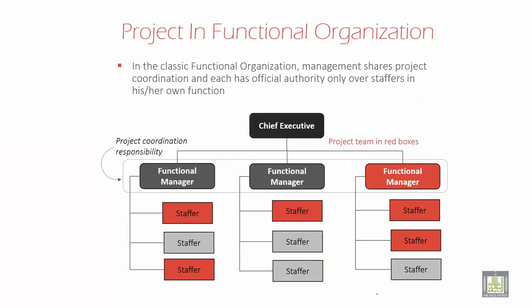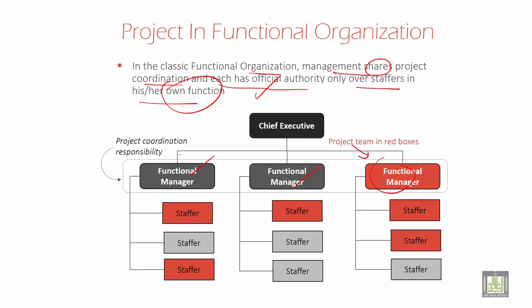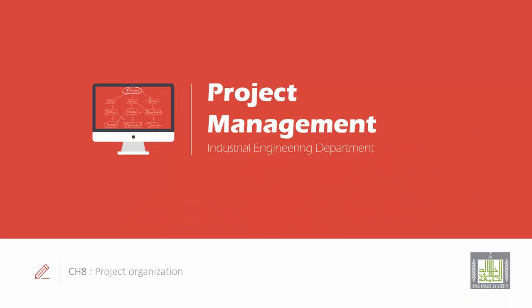In classic functional organization, management shares project coordination and each has official authority over staffs in their own function. For example, the chief executive is the main head with three functional managers below. There is a project team, and the black boxes represent project coordination responsibility. The coordinator is the project coordinator, and the red boxes represent project team members.